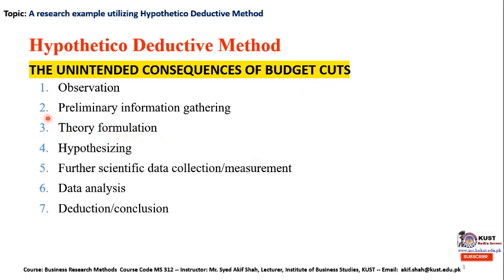The hypothetical deductive method comprises seven steps. It starts with observation — sensing the broad problem area prevailing in the organization. The second step is to gather preliminary information regarding the research problem. Third, after highlighting the variables, theory formulation is done. Step four involves making testable statements — null and alternative hypotheses — which provide grounds for statistical analysis. Step five is scientific data collection and measurement of variables, followed by data analysis, and finally deducing the conclusion.